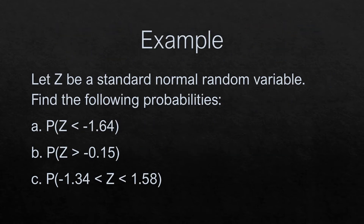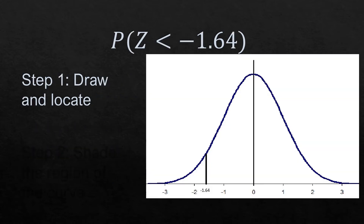To give you an example, let Z be a standard normal random variable. Find the following probabilities: first, the probability that Z is less than negative 1.64; second, the probability that Z is greater than negative 0.15; and third, the probability that Z is greater than negative 1.34 but less than 1.58.